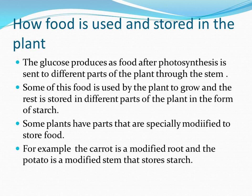After photosynthesis, the product is glucose. The glucose produced as food is sent to different parts of the plant through the stem. The stem carries the food and supplies it to all parts of the plant. Some of the food the plant will use to grow.